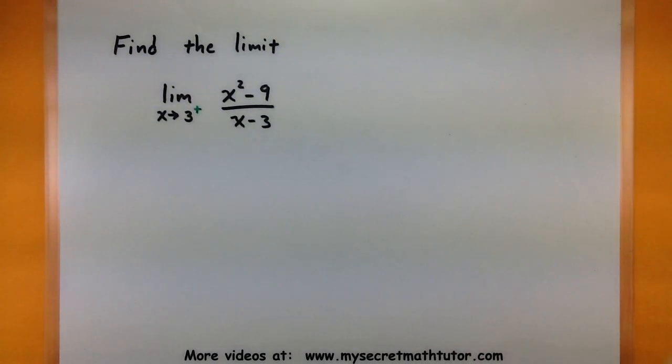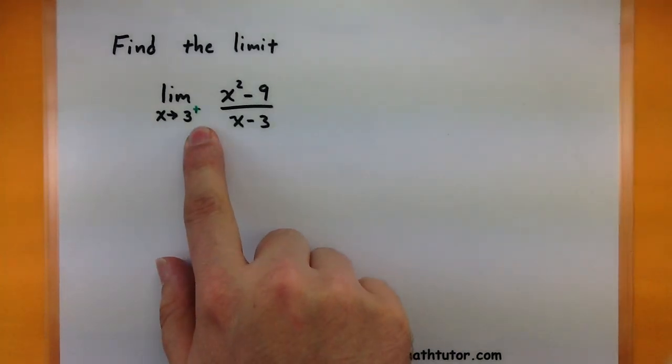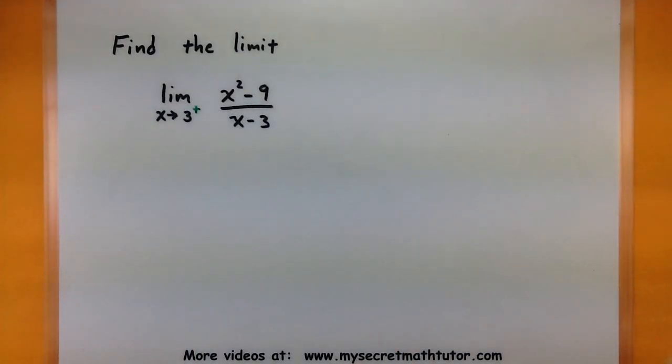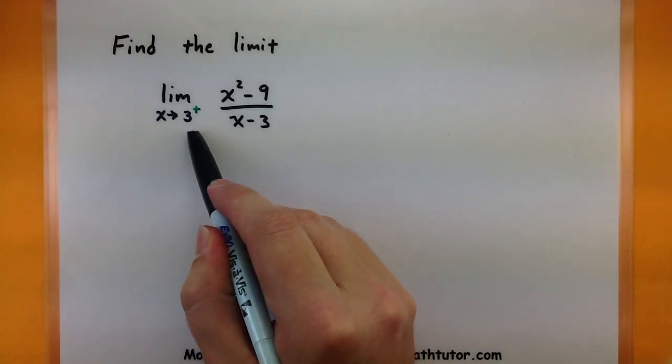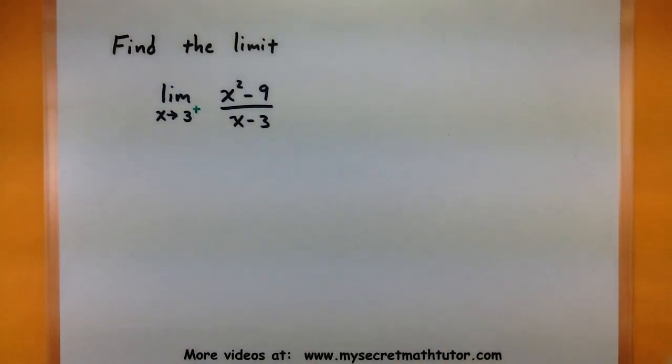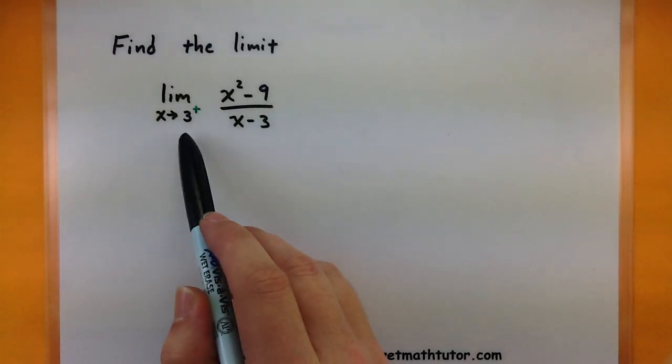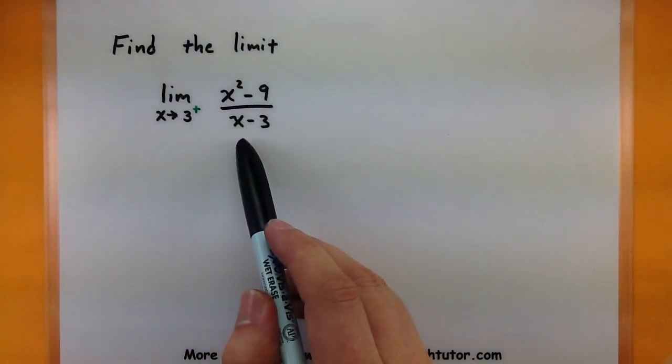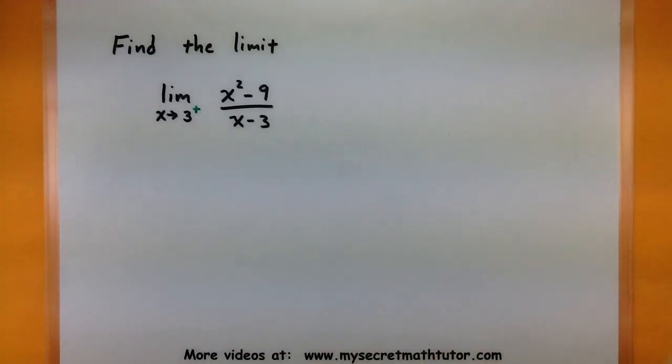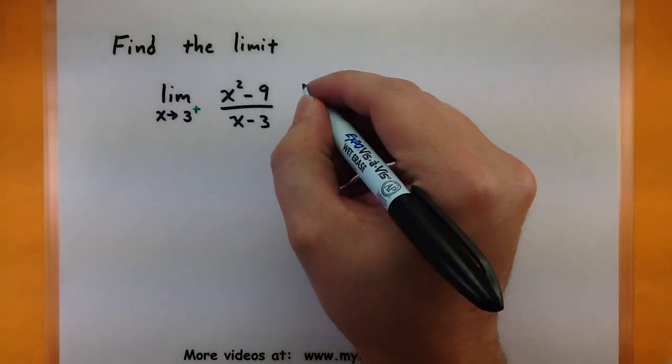So I want to find the limit as x approaches 3 from the right of x squared minus 9 all over x minus 3. When it comes to computing a limit like this, one of the first things you want to check is to see if there are any problems happening at that value. And actually, for this one, we get a big problem. If you try and use 3 directly, notice how you get a 0 on the bottom of your function here. Of course, we can't divide by 0, so trying a direct substitution is simply not going to work.